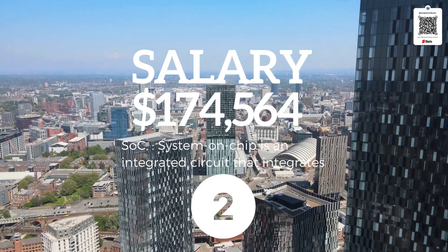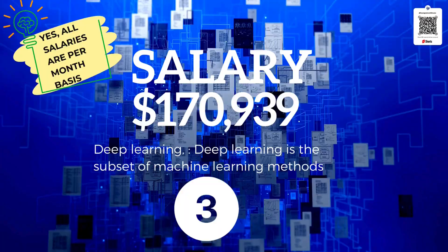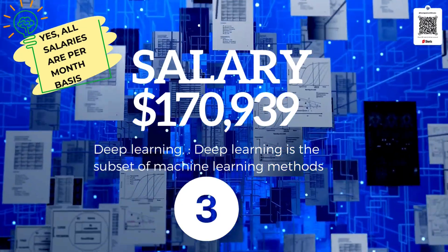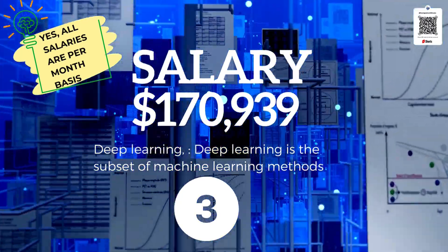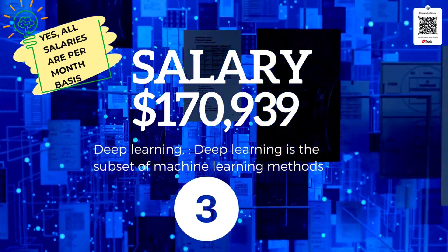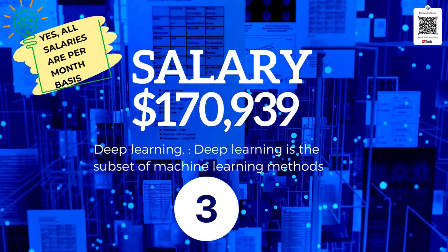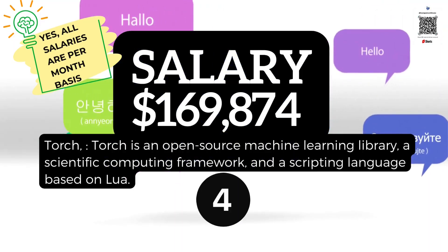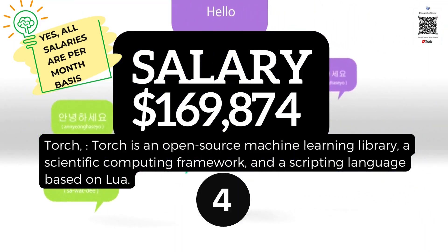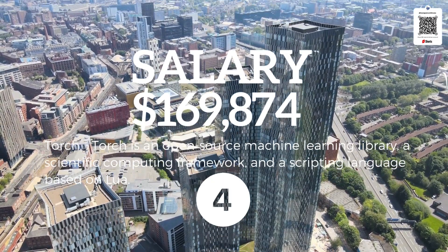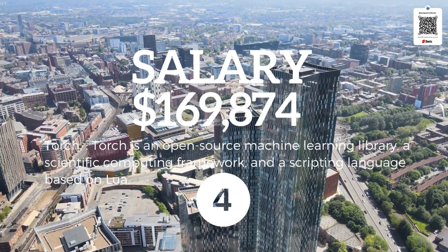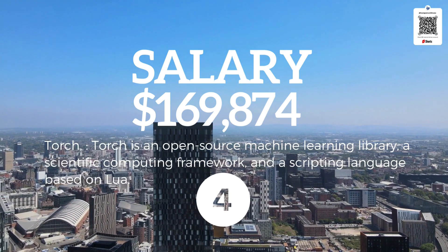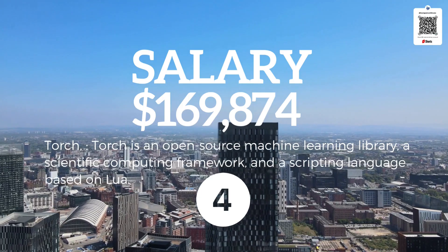Number three is Deep Learning, and for that, the salary is $170,939. Deep learning is a subset of machine learning methods based on artificial neural networks with representation learning. Number four is Torch, an open-source machine learning library, giving a salary of $169,874, which is a scientific computing framework and a scripting language based on Lua.